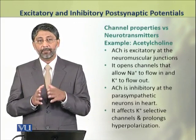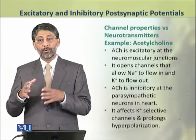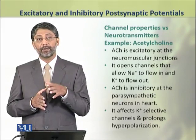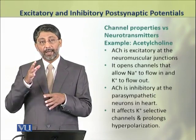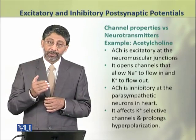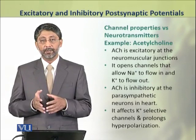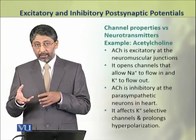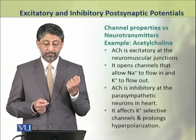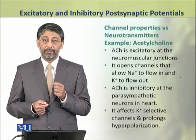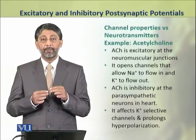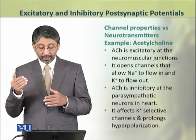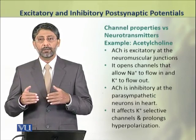Dear students, there are some neurotransmitters which act both as inhibitory as well as excitatory. A best example of such a neurotransmitter is acetylcholine, which acts as an excitatory neurotransmitter at the neuromuscular junction where it opens sodium ion channels and causes the inflow of sodium and outflow of potassium. The same acetylcholine is inhibitory in the parasympathetic neurons in the heart, where it affects potassium-selective channels and causes hyperpolarization.